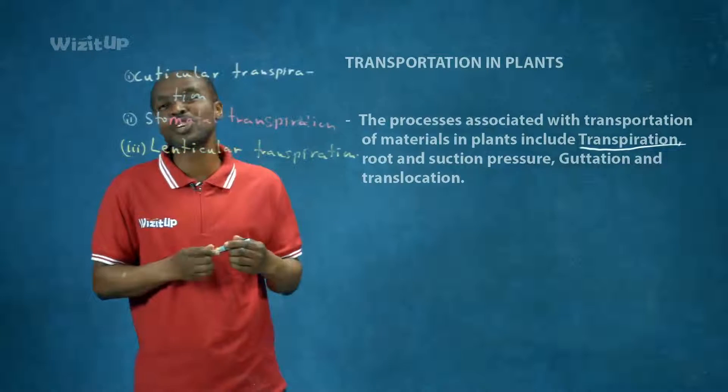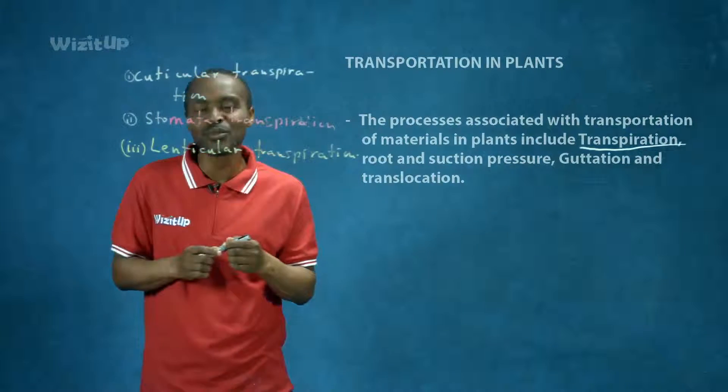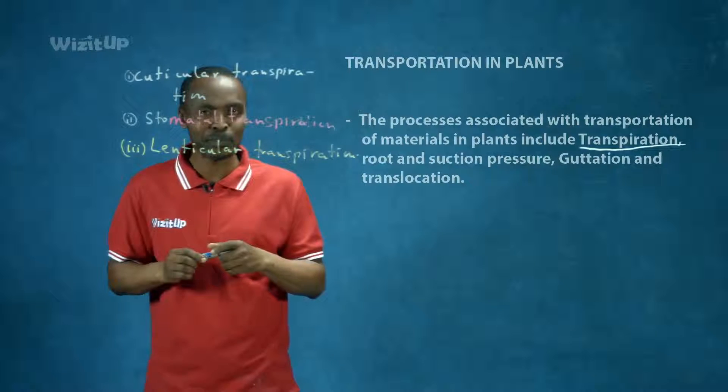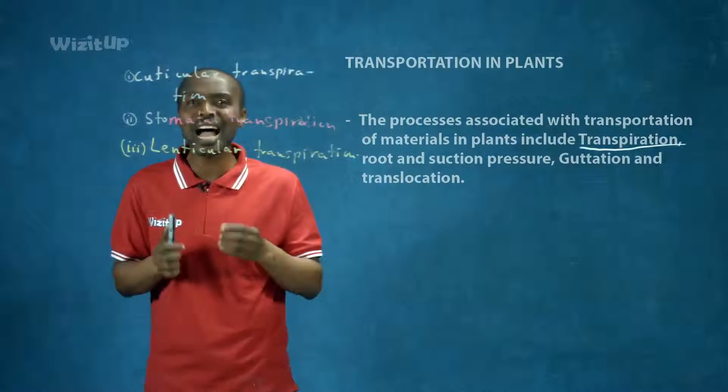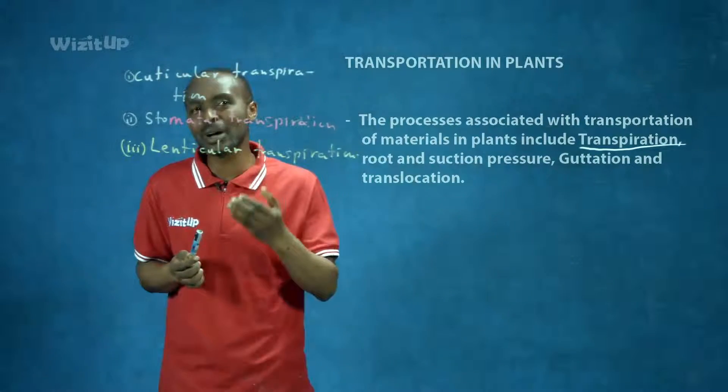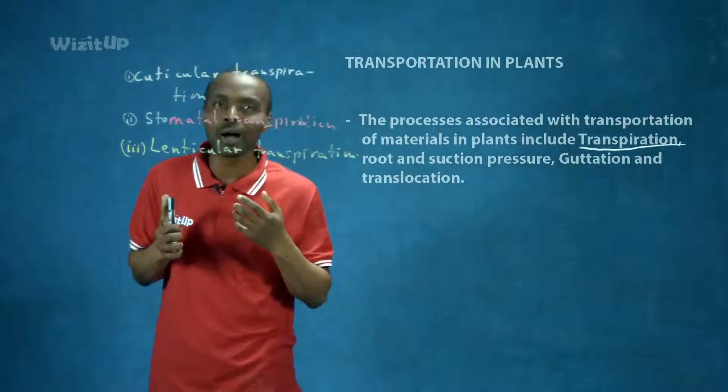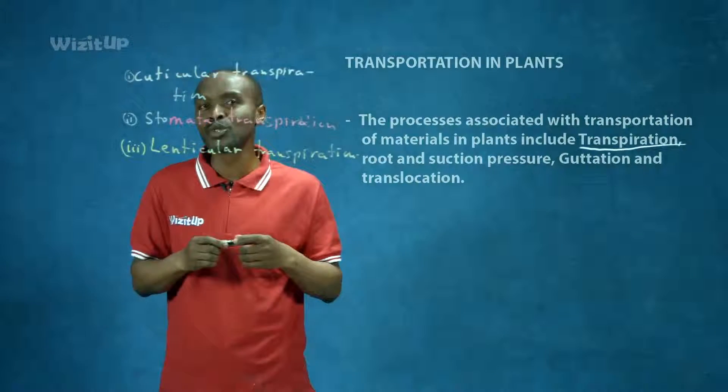Stomatal transpiration is the loss of water through tiny openings on the leaves called the stomata, singular stoma. Through the stomata, a large amount of water can be lost. That's why stomatal transpiration is the main type of transpiration, because a lot of water is lost from the leaves to the outside.